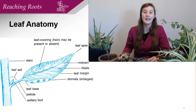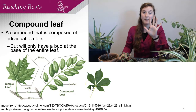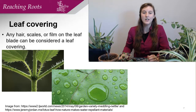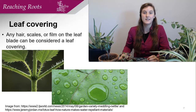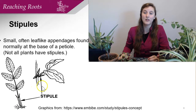Leaves come in all shapes and sizes, and even combinations. A compound leaf is composed of individual leaflets, but it will only have one bud at the base of the entire leaf. Compound leaves come in various configurations, such as palmate type, looking like the palm of your hand. Some leaves are needle-like. Leaves have leaf coverings, which can be anything like hair, scale, or film on the leaf blade. Almost all leaves have an invisible wax layer called the cuticle, which prevents water loss from the leaf surface. Stinging nettle plants have hairs called trichomes in addition to this cuticle layer. This hair gives extra insulation against water loss and discourages plant-eating animals by making leaves less easy to eat. Some plants also have stipules, which are leaf-like appendages found normally at the base of a petiole.